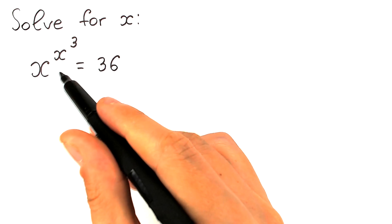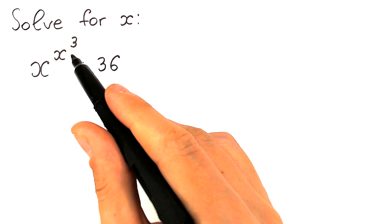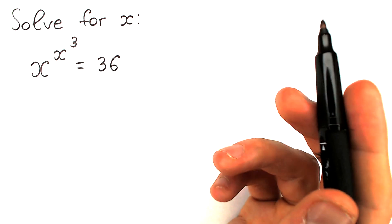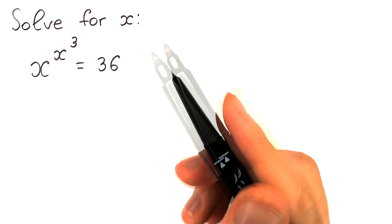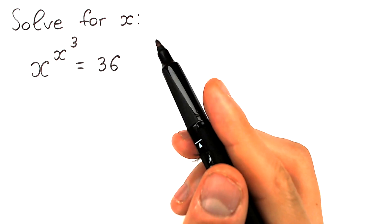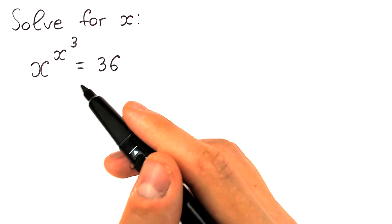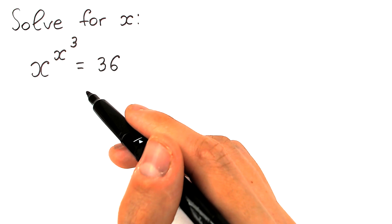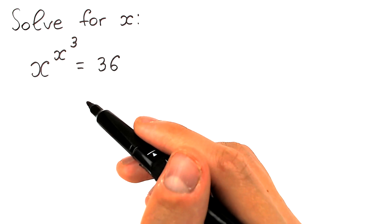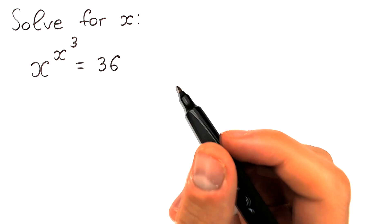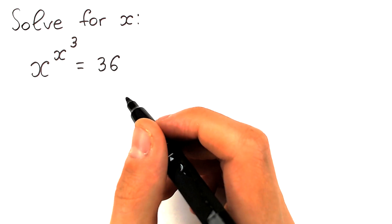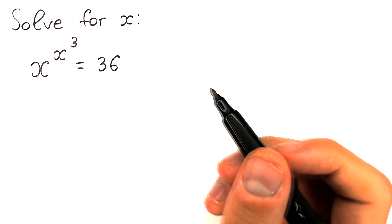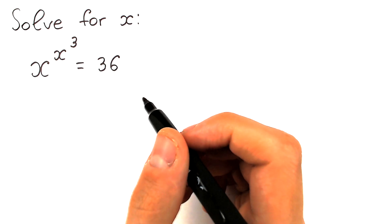We have x to the power x to the power 3, equal to 36. So what is the correct answer? Write your suggestion down in the comment section, because it looks like a pretty basic, easy question, but a lot of students don't know how to solve it. In this video I'm going to fully explain how to do this quickly and without any problems.